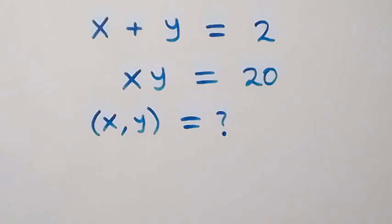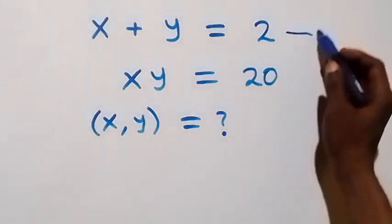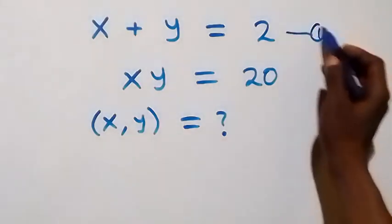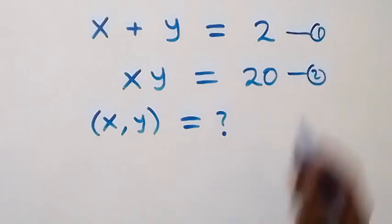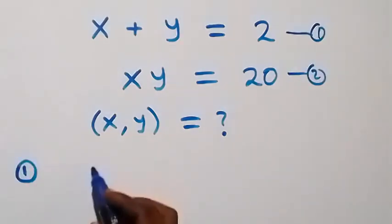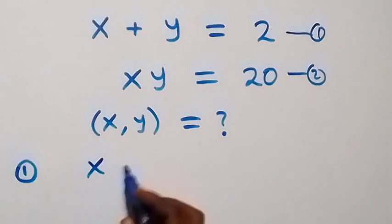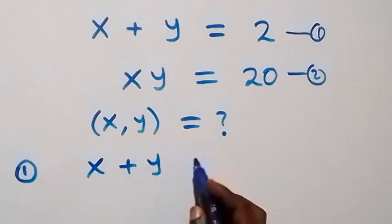Hello y'all, welcome. How to solve for x and y in this algebra equation. Let's label this as equation 1 and this as equation 2. From equation 1, which is x plus y equals to 2.